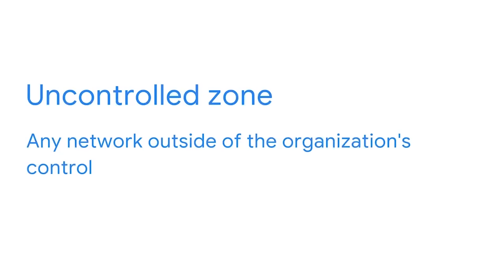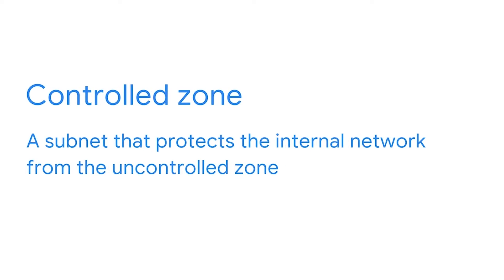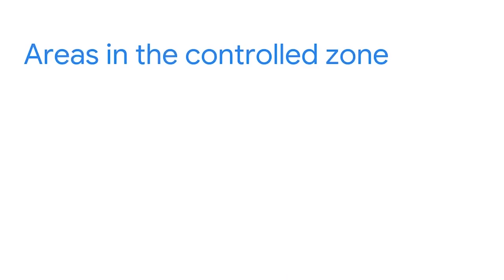An organization's network is classified into two types of security zones. First, there's the uncontrolled zone, which is any network outside the organization's control, like the Internet. Then there's the controlled zone, which is a subnet that protects the internal network from the uncontrolled zone. There are several types of networks within the controlled zone. On the outer layer is the demilitarized zone, or DMZ, which contains public-facing services that can access the Internet.